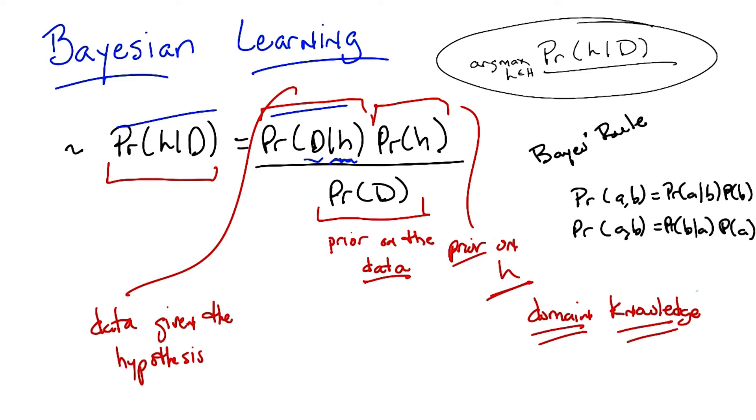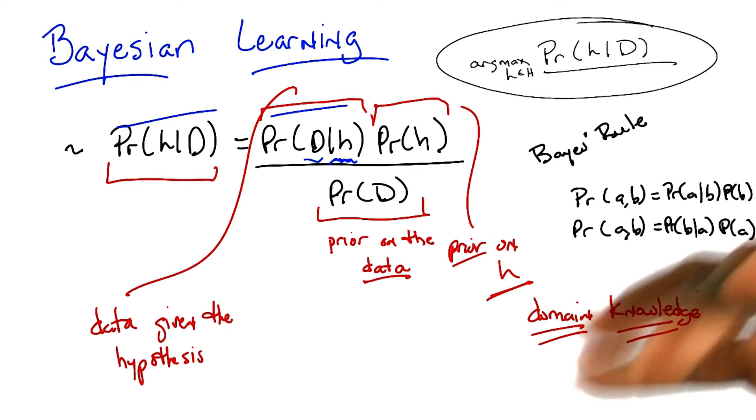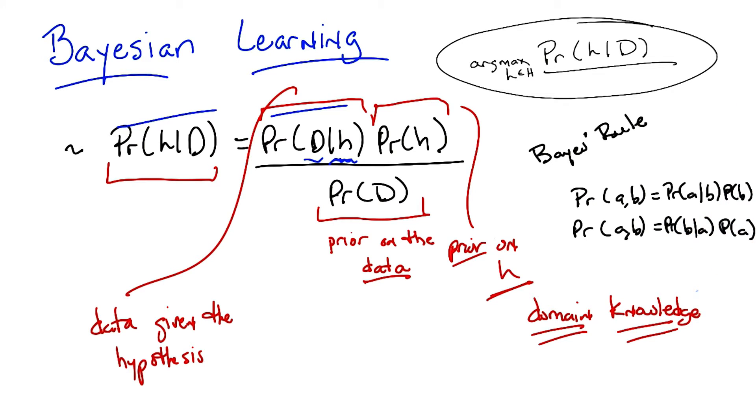Whether that's a similarity metric for KNN, or whether it's something about which features might be important, so we care about high information gain in decision trees, or our belief about the structure of a neural network. Those are prior beliefs, that represents domain knowledge.